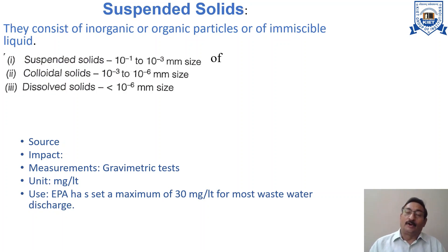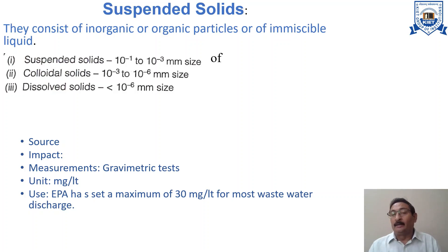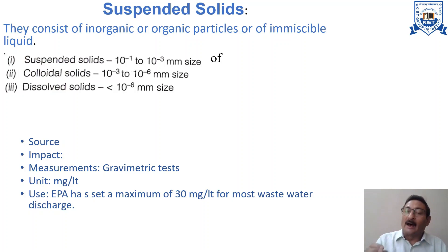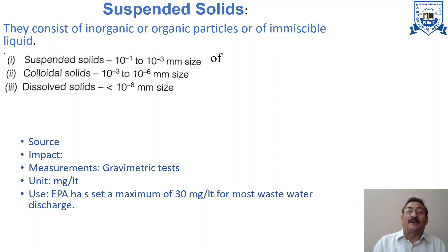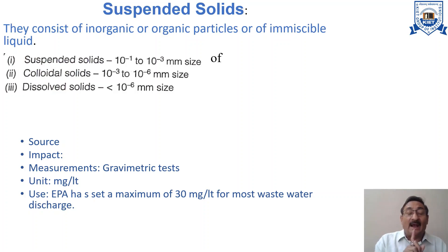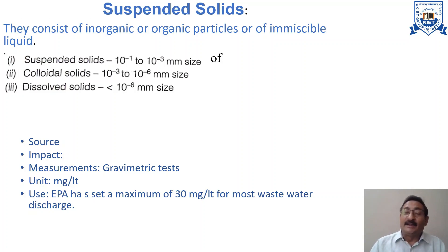The next parameter is suspended solids. Solids can be found in water in three forms: suspended, colloidal, and dissolved. When the particle size is 10⁻¹ to 10⁻³ mm, it is known as suspended solid, supported by viscous and buoyant forces in the water. Colloidal solids have a size of 10⁻³ to 10⁻⁶ mm — they are very small particles that are technically suspended but exhibit characteristics of dissolved solids most of the time. Dissolved solids have a particle size less than 10⁻⁶ mm and consist of molecules or ions held by the molecular structure of water.